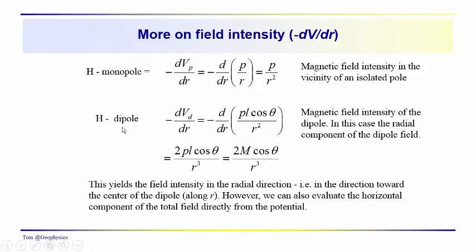For the dipole, when we take the derivative of the potential, the potential has a completely different form than the potential for the monopole. We have the magnetic dipole moment times the cosine of theta — the co-latitude, the angle that the line of observation makes with the axis of the dipole — divided by R squared. Taking the negative derivative of that gives us a field intensity that varies as the cube of the distance to the center of the dipole.